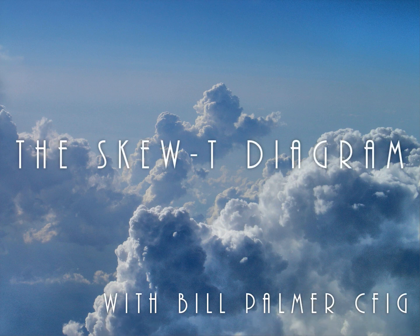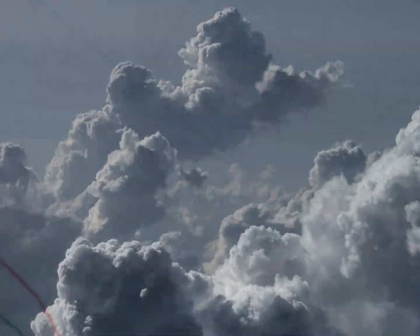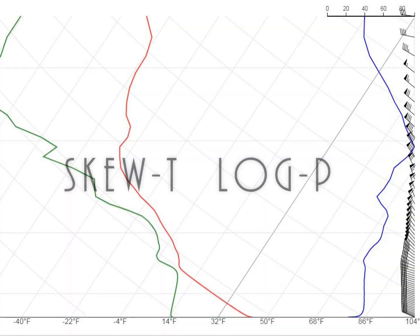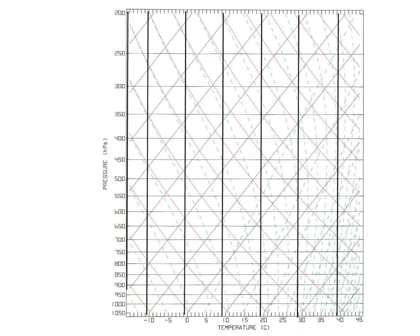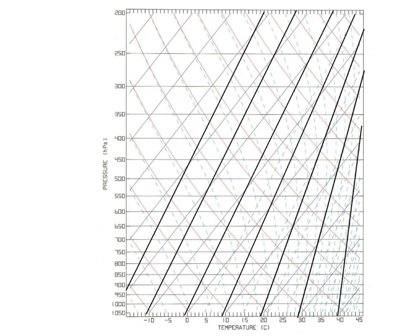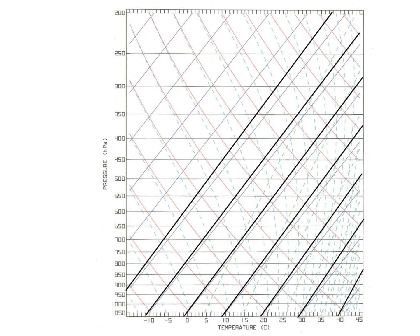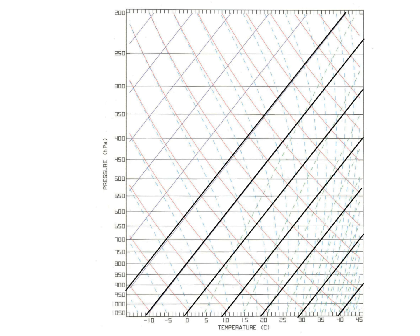Let's talk about the skew-T diagram, sometimes called the skew-T log-P. It may be a little intimidating at first — even the name may seem scary. Simply, skew-T just means that the temperature lines, the T, are skewed off the vertical at a 45-degree angle. That lets the lines plotted on the chart go mostly vertical and not sailing off to the side.